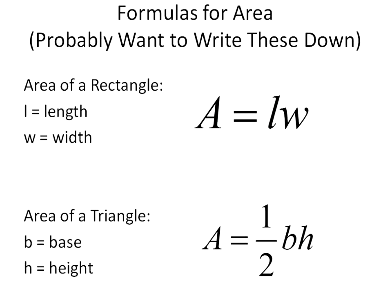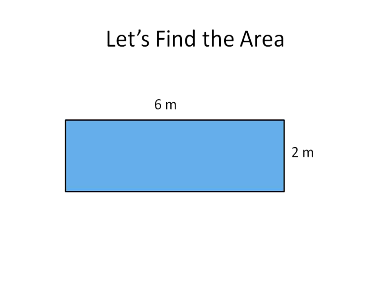We're going to go ahead and show some examples of finding the area for both. So here is a rectangle. If we draw our squares over top of that, we can count how many squares it has. One, two, three, four, five, six, seven, eight, nine, ten, eleven, twelve. Twelve squares or twelve square meters.